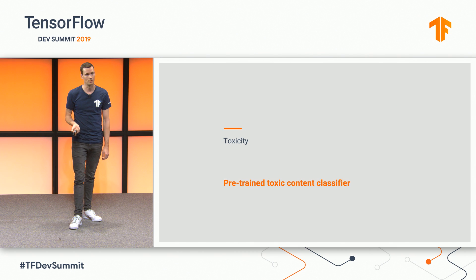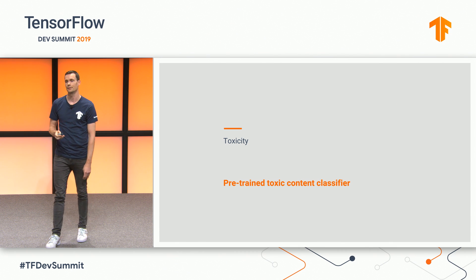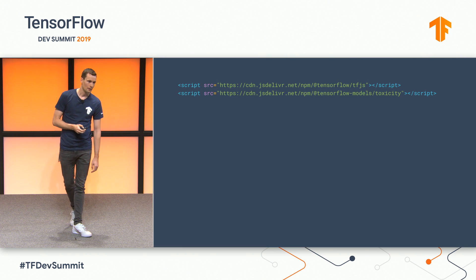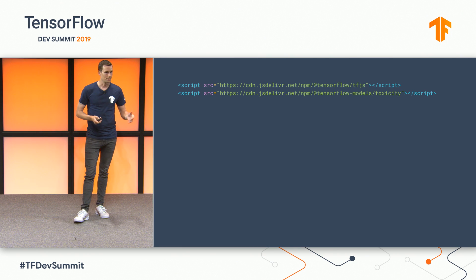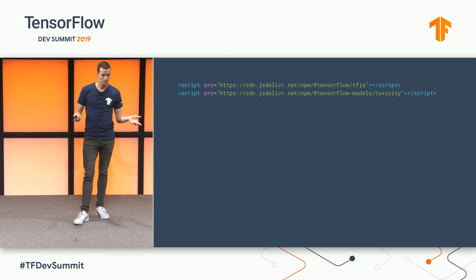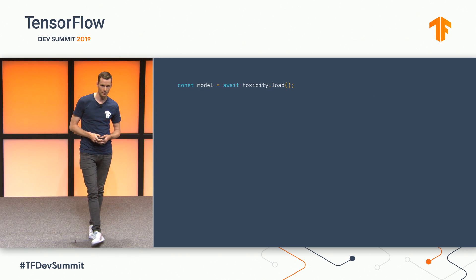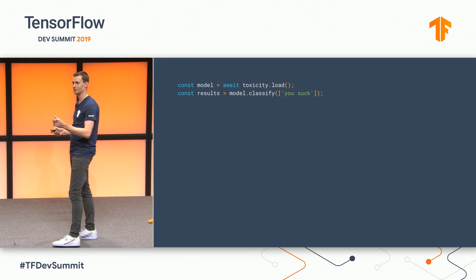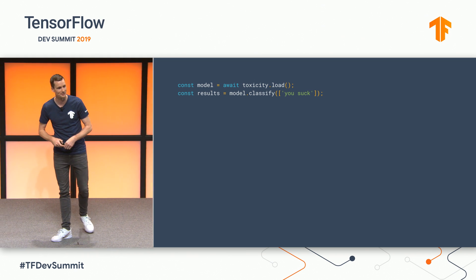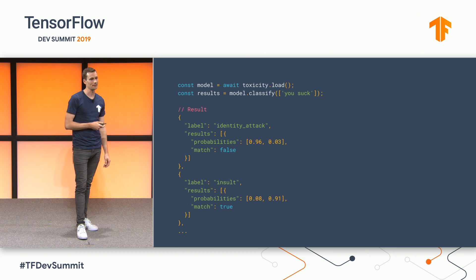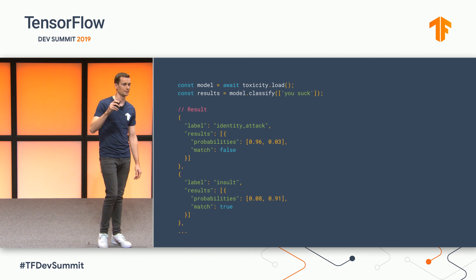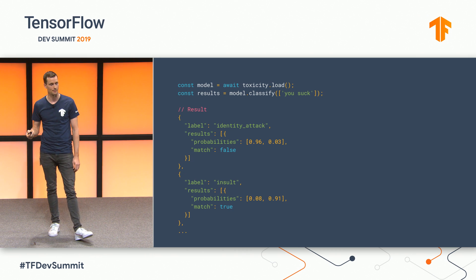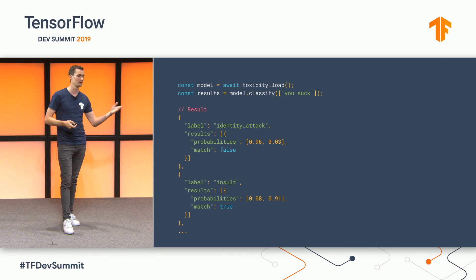Another model we just launched a couple weeks ago is the toxicity model. It's an out-of-the-box text classification model. To use this model, we'll use the pre-hosted scripts — two lines of code. I'll load the toxicity model and ask it to classify some lovely text, pretty PG: "you suck." I'll get a result back as a JavaScript object that has seven labels identifying different types of toxic text, along with probabilities and whether it matches.